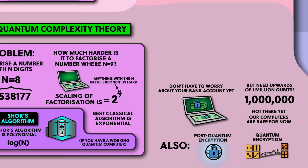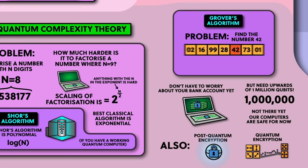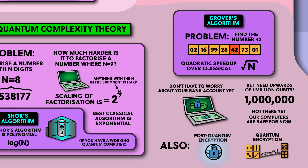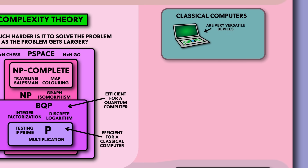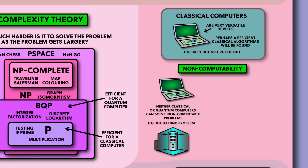So that was a look at just one quantum algorithm, but there are many more, each with different levels of speedup. Another notable example is Grover's algorithm, which can search unstructured lists of data faster than the best classical algorithm. But I should be careful here not to mischaracterise classical computers — they are very versatile devices, and there's nothing to say that someone may find a very clever classical algorithm that could solve the hardest problems like integer factorisation more efficiently. People think it's very unlikely, but it's not ruled out. Also there are problems that we can prove are impossible to solve on classical computers, called non-computable problems, like the halting problem. But these are also impossible to solve on a quantum computer. So computationally, classical computers and quantum computers are equivalent to each other — the differences all come from the algorithms that they can run.